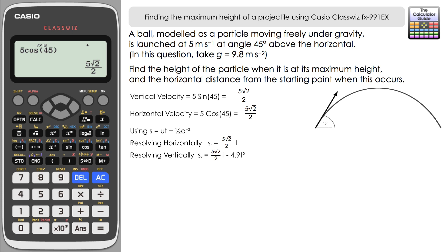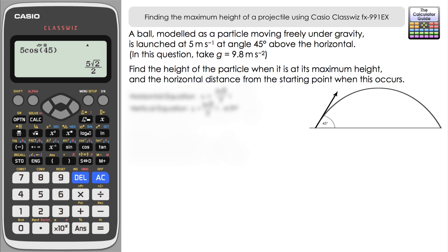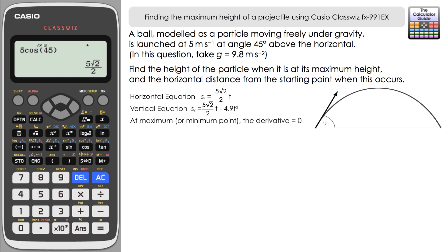Now we're going to solve for the time when the particle is at its highest point. There are two methods — the first uses rate of change. We know that at the maximum point the gradient is zero, so the derivative dy/dt equals zero. We'll use the ClassWiz to solve for t when the derivative of the vertical equation equals zero.